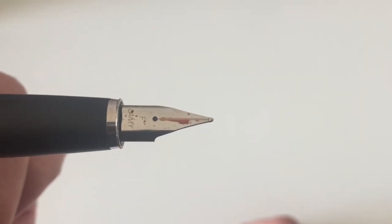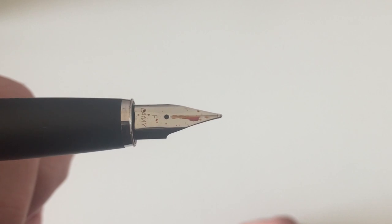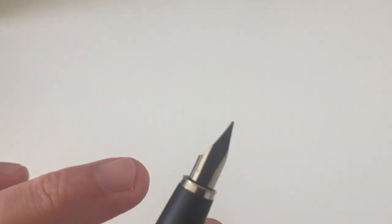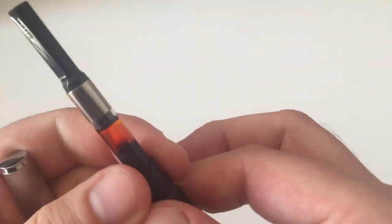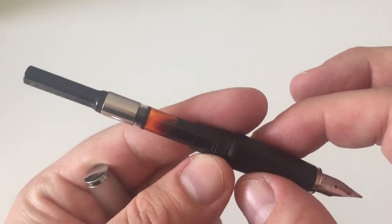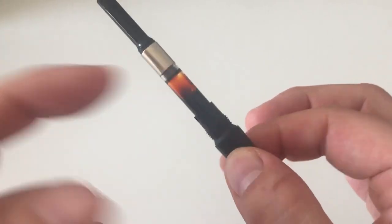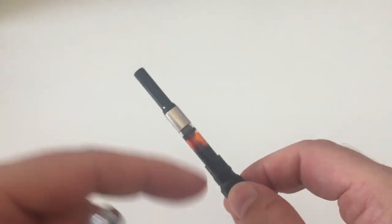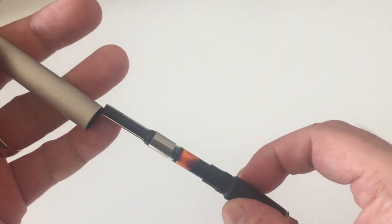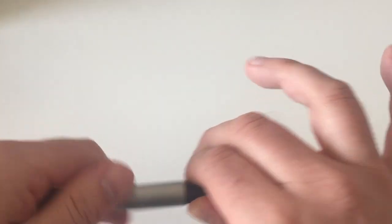Then on to the nib. The nib of course is the regular Lamy Z50. I got a fine nib here. You see a little bit of Caveco Sunrise Orange on the nib. I'm going to talk about the nib in a minute when I do the writing sample and when we open the pen. Here's the Z26 converter that I talked about, and the pen is filled with Caveco Sunrise Orange. Of course you could also put in a Lamy T10 cartridge, the proprietary one.